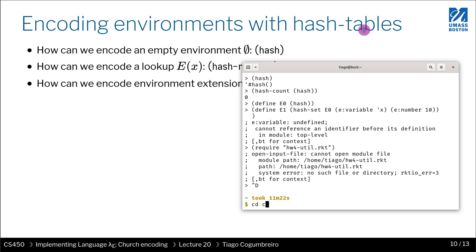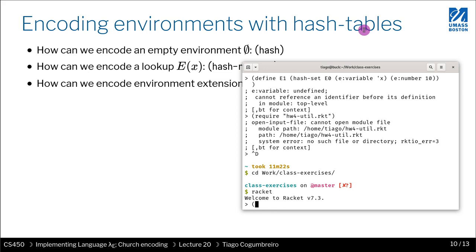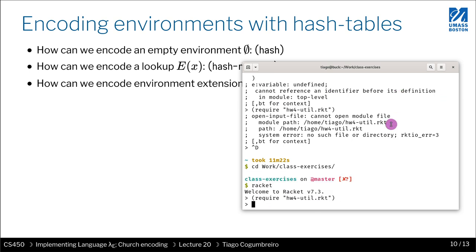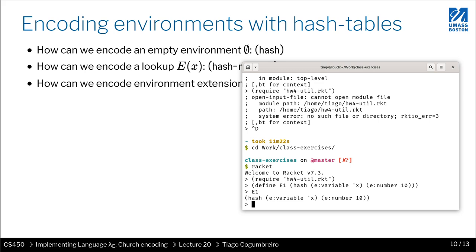Now I do racket. Now I do require hw4util.racket. And now I'm going to define a hash table. So e1 is a hash table, sorry, an environment that has a variable x assigned to a number 10. So if I do e1, I will see exactly that. I see this.